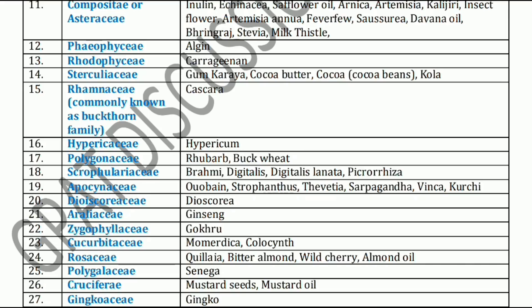Next family is Dioscoreaceae family. Dioscoreaceae family name indicates Dioscorea. Next, Araliaceae family. Araliaceae includes Ginseng, which is used as an immunomodulator.